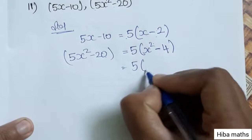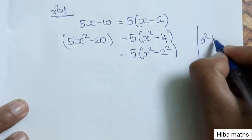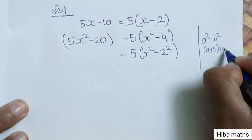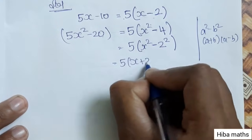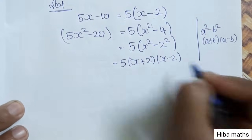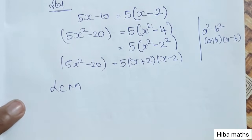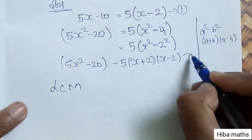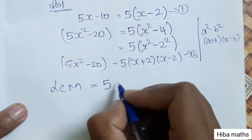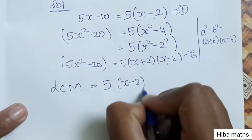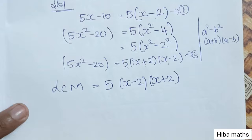x² minus 4 is 2², which is in the form a² minus b². Using the formula (a+b)(a-b), we get 5(x+2)(x-2). Now for the LCM: both terms have 5 common, so we take 5. Then x minus 2 is common, so we take x minus 2. And x plus 2 is not common, so we include x plus 2. Therefore LCM = 5(x-2)(x+2).